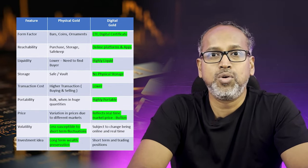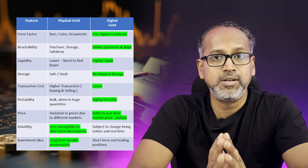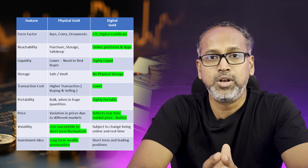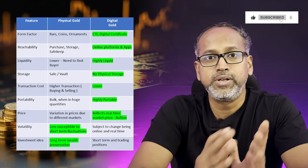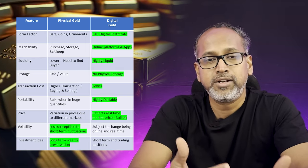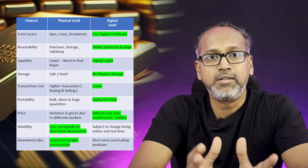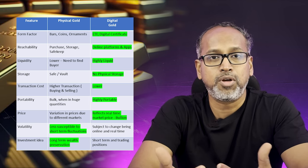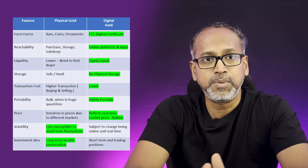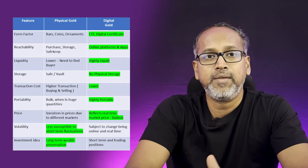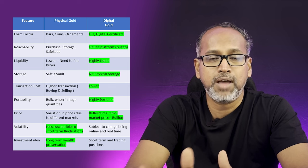On investment strategy: physical gold is bought for long-term wealth creation — you purchase ornaments or jewelry and keep them for generations, passing from parents to children as a heritage lineage. Digital gold is more like equity trading, where you invest for both short-term and long-term, trade for profits, sell anytime, and enjoy returns within your lifetime. These are the key differences between physical and digital gold.